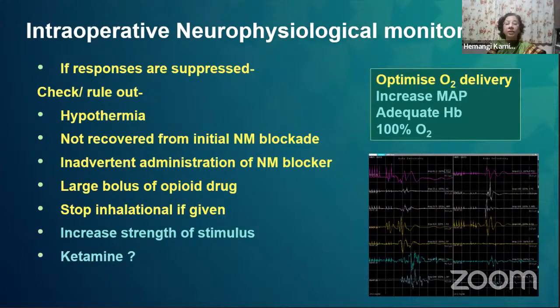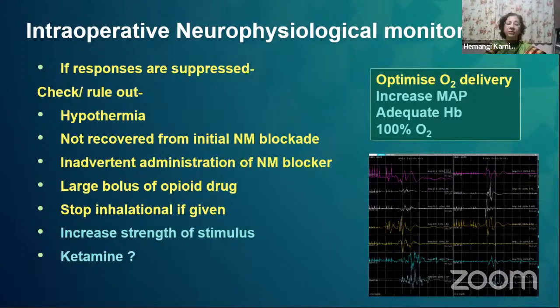If suppression is only in the lower limbs, the surgeon will flood the area with cold saline. The neurophysiologist will increase the strength of the stimulus after some time and recheck. Ketamine at this time will not be useful.